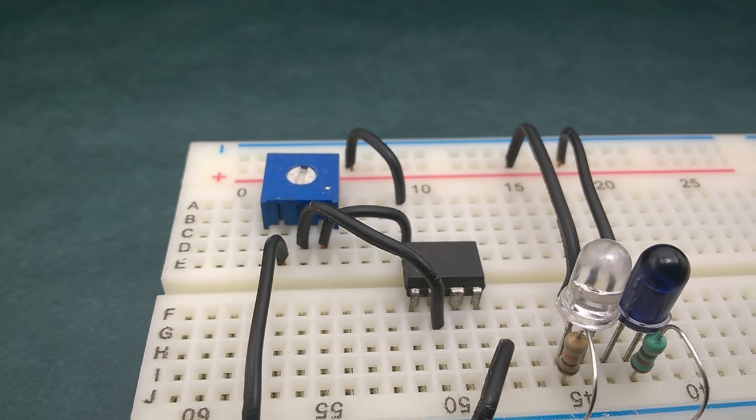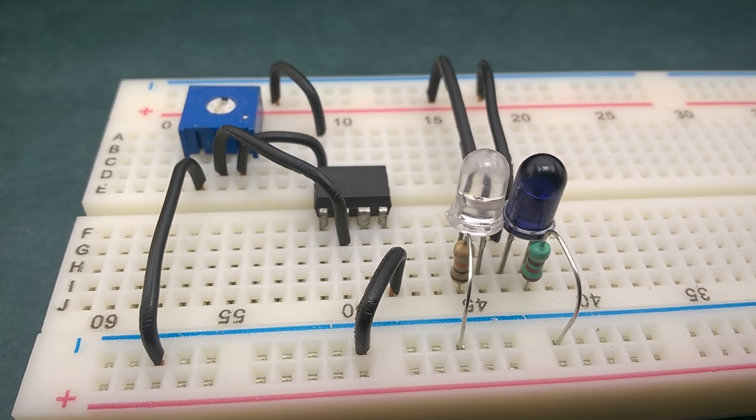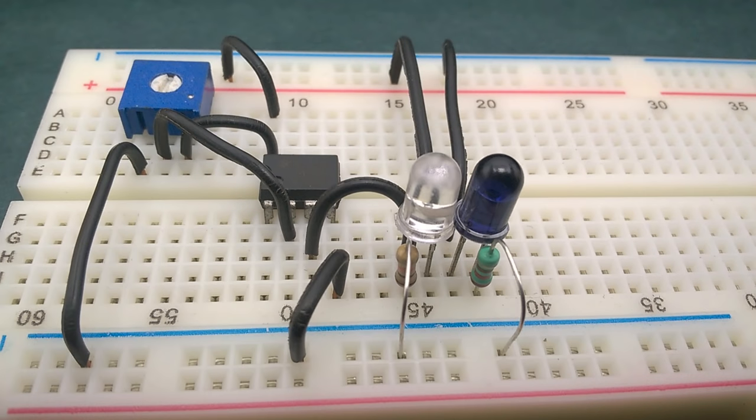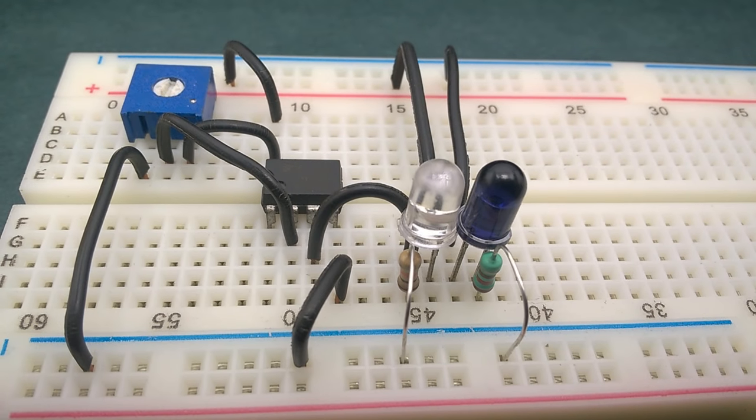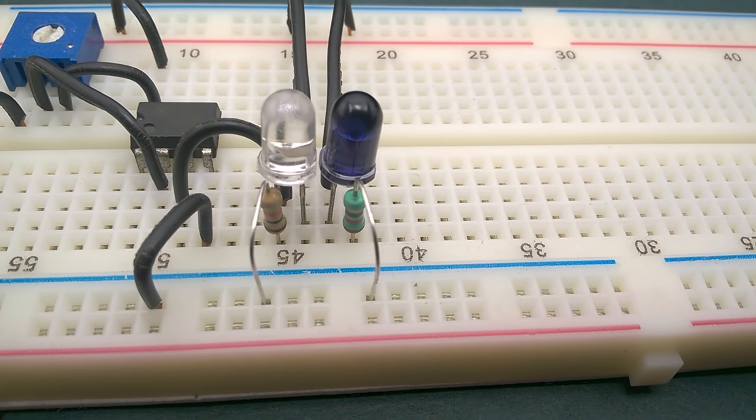So let's connect this to the inverting input which is pin 2 of LM358 and connect the non-inverting input of LM358 which is pin 3 to the positive terminal of the infrared photodiode.